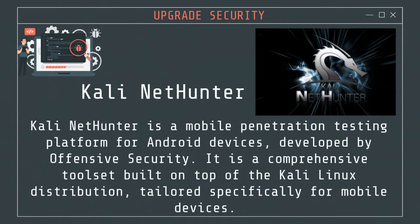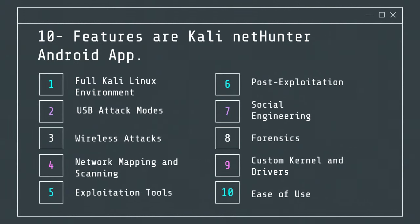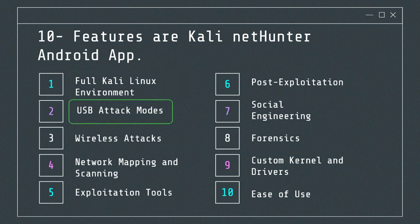Number 9: Kali NetHunter is a mobile penetration testing platform for Android devices developed by Offensive Security. It is a comprehensive toolset built on top of the Kali Linux distribution, tailored specifically for mobile devices. Kali NetHunter provides a full-fledged Linux environment on Android equipped with tools for network analysis, penetration testing, and security research. It offers a complete Kali Linux system within Android, manages the root environment, and allows switching between Linux distributions. USB attack modes emulate malicious USB devices for keystroke injection and network attacks, and emulate USB Ethernet adapters for man-in-the-middle and packet sniffing attacks on connected devices.